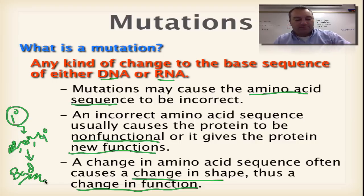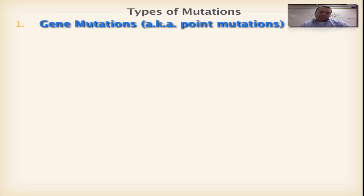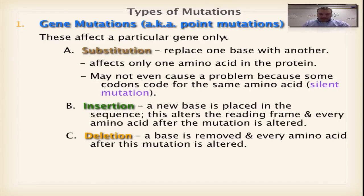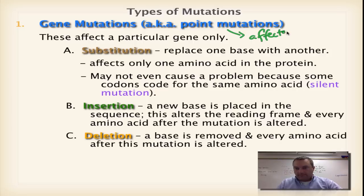Let's look at a type of mutation called a gene mutation. Gene mutations are also known as point mutations because they affect a single point, or single base, within the gene. A point mutation affects a single nucleotide and therefore a single base — a single point on the gene.